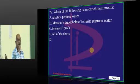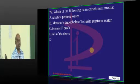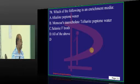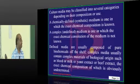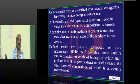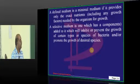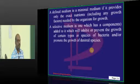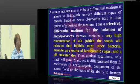What is an enrichment medium? All of them — Selenite, F-Brock, Monsur, Storocolate, Telluride, Peptone water, Alkaline Peptone water — they are all ones which enable organisms to grow, typically making it an enriched medium.